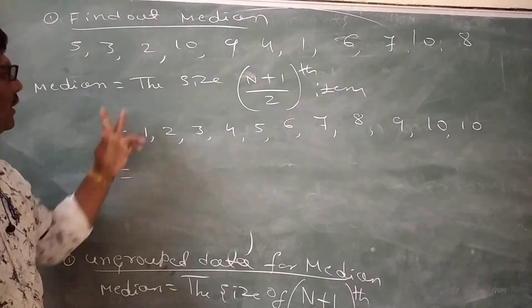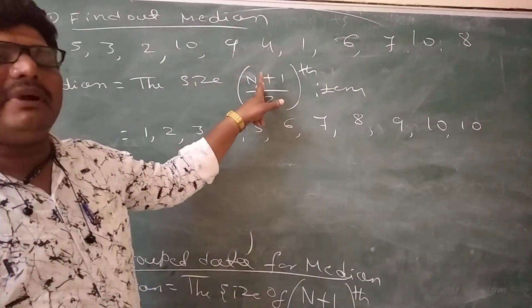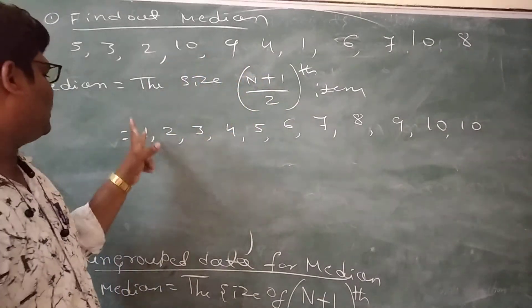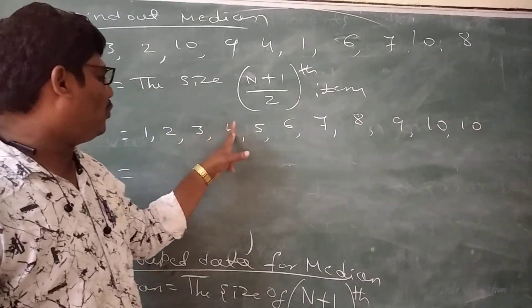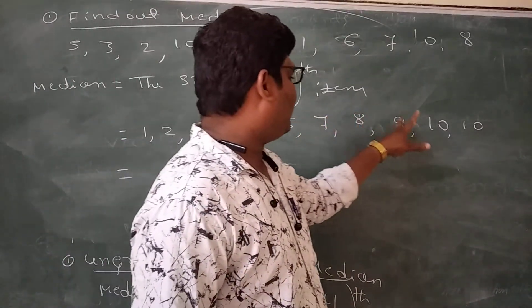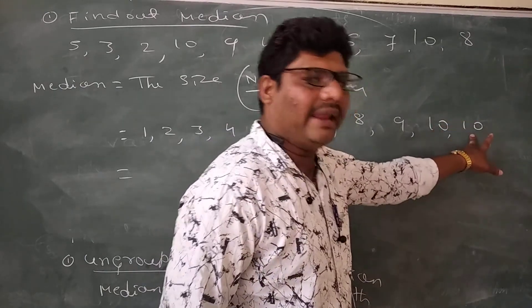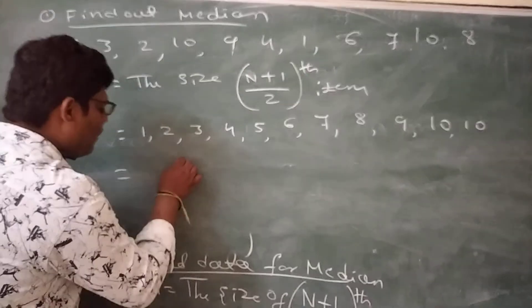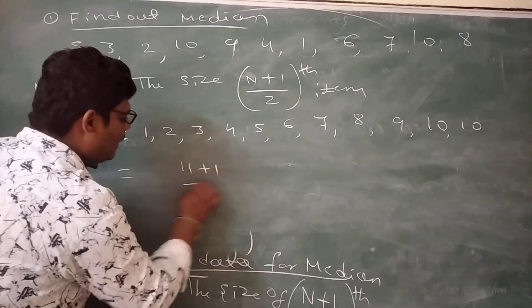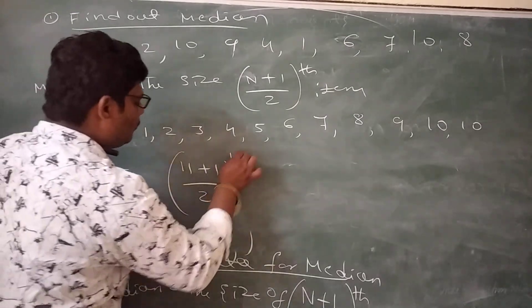Once again counting, the size of n, n nothing but numbers. How much numbers? 1, 2, 3, 4, 5, 6, 7, 8, 9, 10, 11. Total number is 11. 11 plus 1 by 2, this is items.